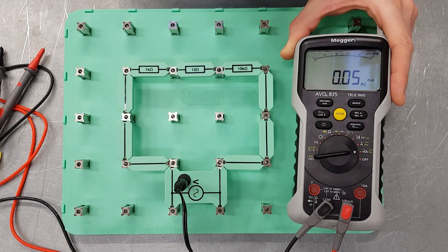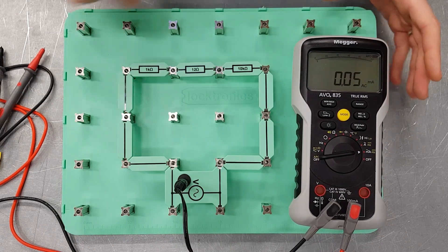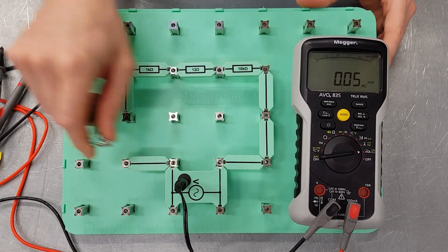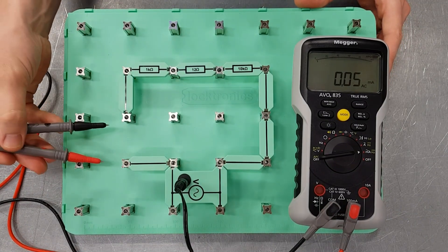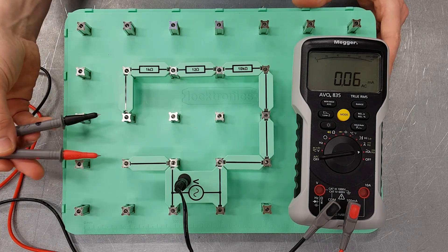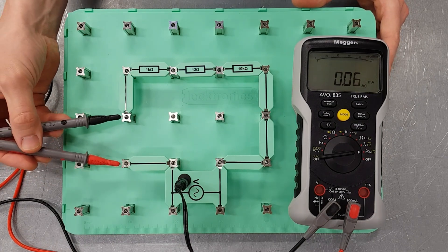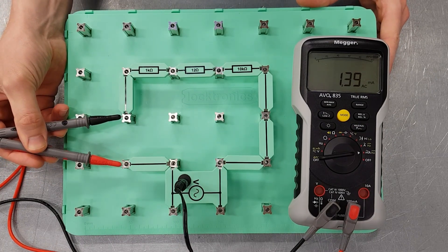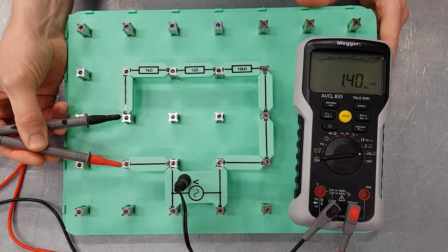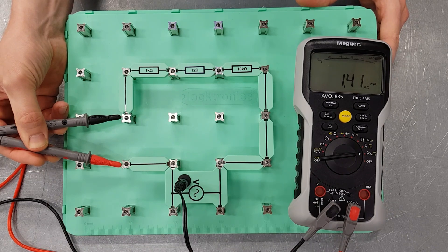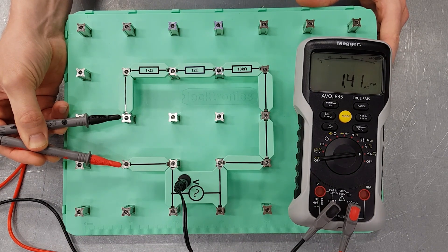So if we just pop that down there, and again, following exactly the same principle that we followed before, we're going to connect up our meter in series with the circuit. So ammeters are connected in series, remember that. And we're going to measure the current flowing into the circuit and we're getting 1.4 milliamps there. So that's our AC current measurement.